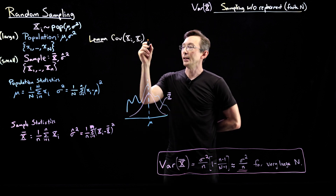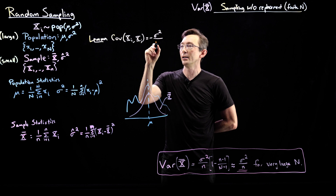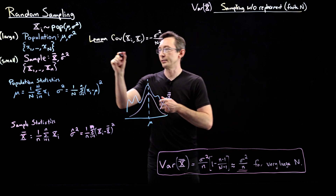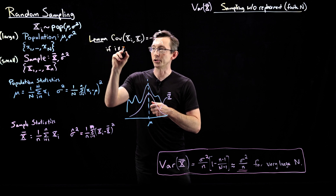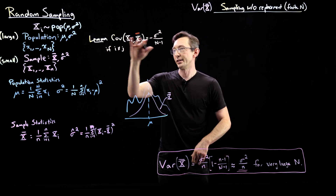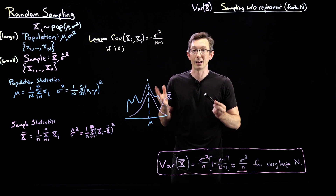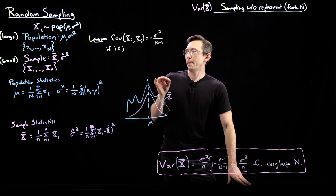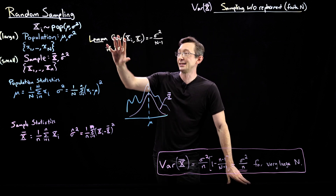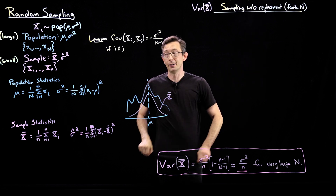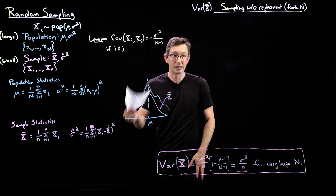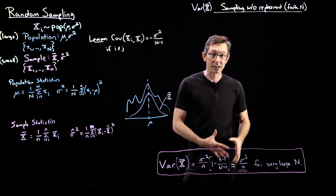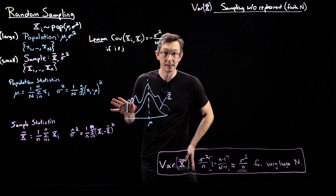The lemma — a lemma is just like a little theorem — is that the covariance of Xᵢ with Xⱼ, if I have two random variables Xᵢ and Xⱼ in the same sample, then this covariance is going to equal −σ²/(N−1), if i does not equal j. If i equals j, then the covariance is just σ² — they're exactly co-varied. This is a technical result that you can prove, but it's in my notes and it's in books.